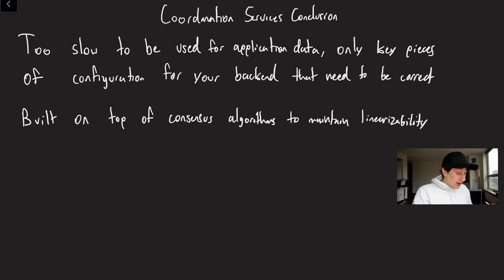So let's quickly do a conclusion for coordination services. Basically, they're too slow to be used for most of our application data in a real massive service like Facebook or Twitter. If you're sending all the writes through a single leader, and that has to effectively go through some sort of two phase commit, we're running into some serious performance problems that probably are not going to be feasible for the scale of our application. At the same time, all of these apps have key pieces of configuration, which we mentioned before, our backend needs in order to be able to run. We need to know the location of all of our nodes in our cluster, we need to be able to know what data is stored on what partition, things like that.